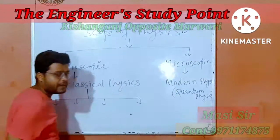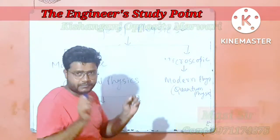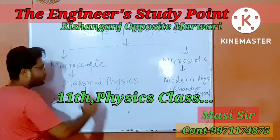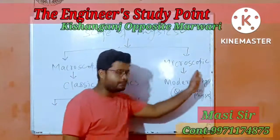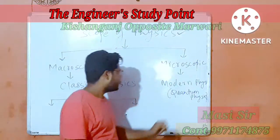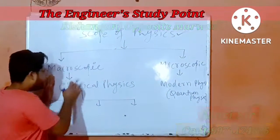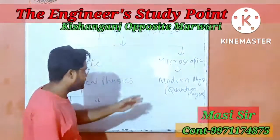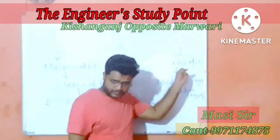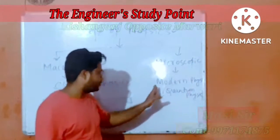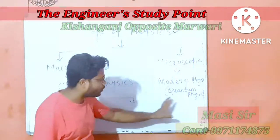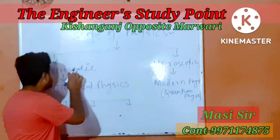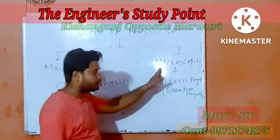There are two parts of the scope of physics. First is the macroscopic and second is the microscopic. Macroscopic is also known as classical physics, and microscopic is also known as modern physics or quantum physics. What is the difference between macroscopic and microscopic?